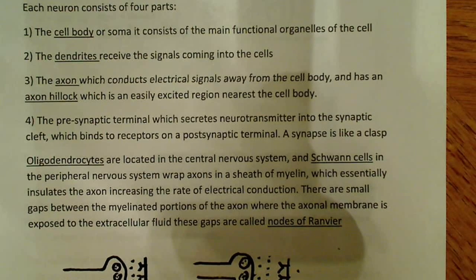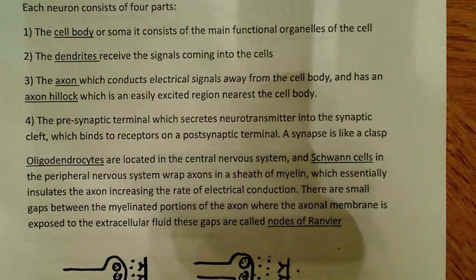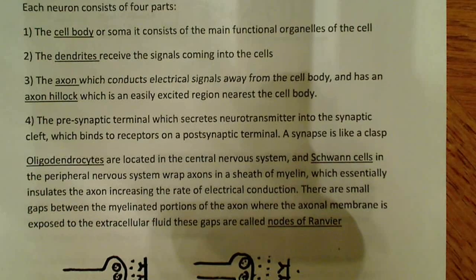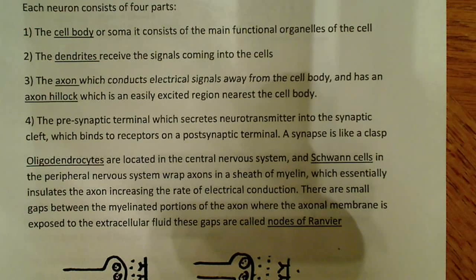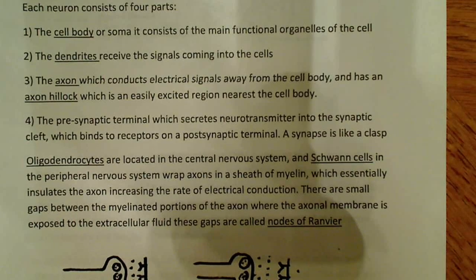Oligodendrocytes, located in the central nervous system, and their counterpart in the peripheral nervous system — Schwann cells — wrap the axon in a sheath of myelin. The myelin sheath insulates the axon, just like the insulation on a copper wire in your house. This insulation increases the rate of electrical conduction, speeding up transmission, which is extremely important. It allows sensory information from, say, your fingertips to be transmitted almost instantaneously — typically within milliseconds.